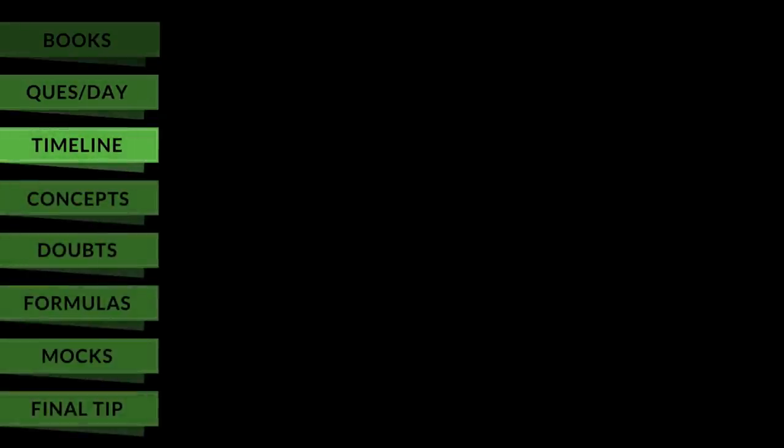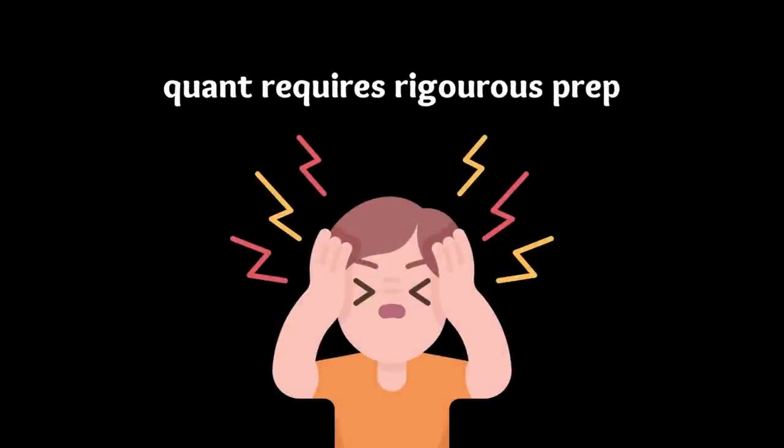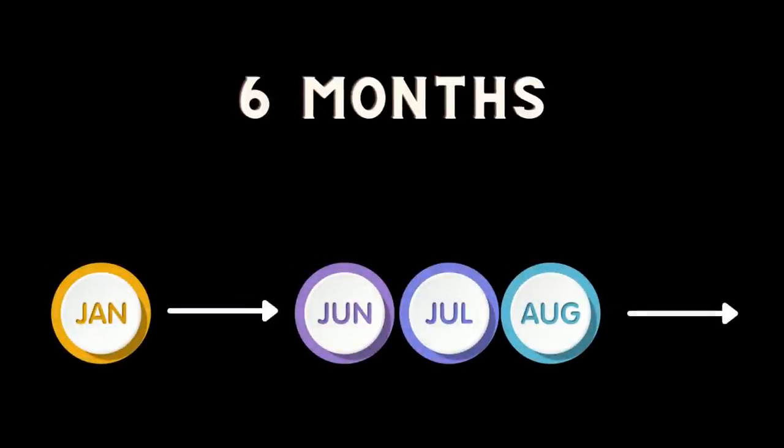The next topic talks about timeline that you should follow in order to cover your syllabus. There is no denying that quant requires the most rigorous amount of preparation given that it has so many chapters to cover. So set a timeline of covering the entire syllabus in about six months of self-preparation. Ideally you should be done with your syllabus by June, July or maximum August end so that you can start taking mocks very frequently after that and improve your score.